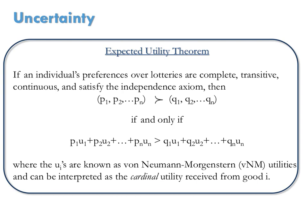Again, to take into account risk preferences, when an individual is facing two lotteries, the individual is going to make a decision based on expected utility. The expected utility theorem says, if an individual's preferences over lotteries are complete, transitive, continuous, and satisfy the independence axiom, then one lottery will be strictly preferred to another lottery if and only if the first lottery's expected utility is greater than the second lottery's expected utility.